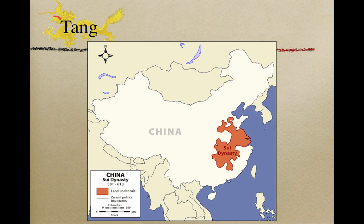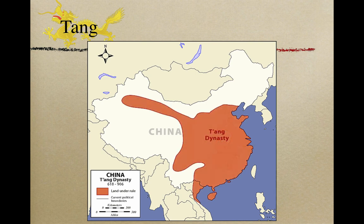Before the Tang dynasty, we have the Sui dynasty, which came back after the fall of the Han dynasty — 300 years of no China. The Sui was not that large compared to what China is today, but look what happens during the Tang dynasty. The Tang dynasty was one of the most geographically extensive empires in China's history. The most significant expansion was in the west, which allowed them to reopen the Silk Road.